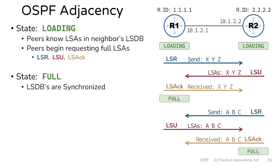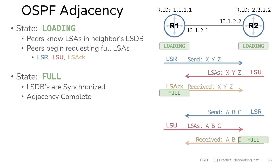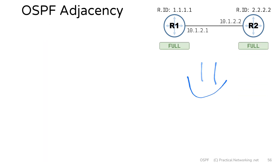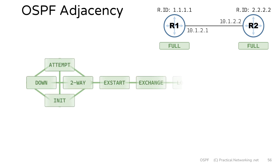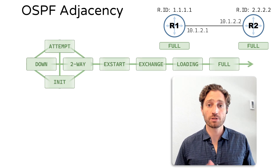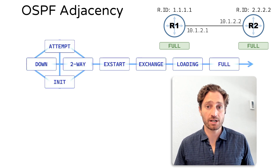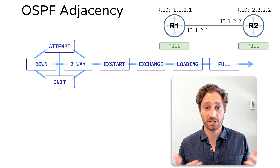In the full state, the LSDBs are finally synchronized, and this actually completes the full OSPF neighbor adjacency. The full state is what I'm going to call the happy state — it's the state that we want all OSPF neighbor adjacencies to reach. In order to reach the full state, the routers step through these eight adjacency states. That takes care of talking through the full OSPF neighbor state machine — you should be able to see all eight states on your screen right now and have a good idea about what happens at each state and why.